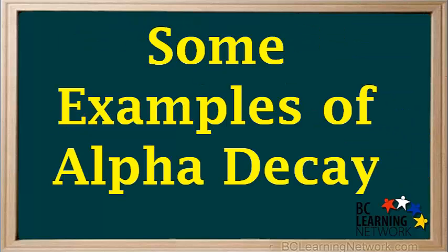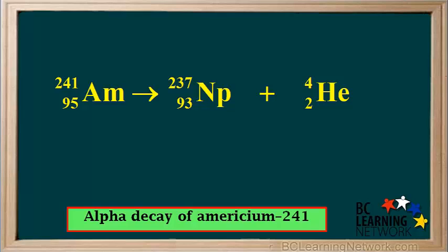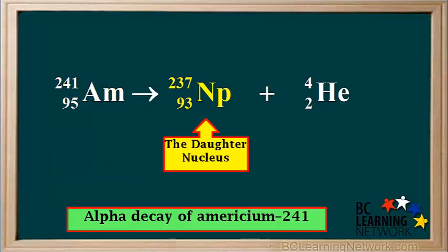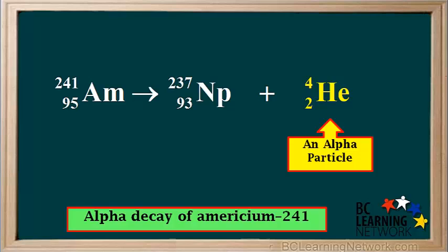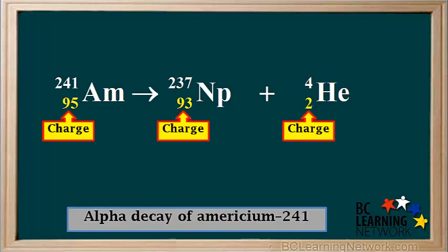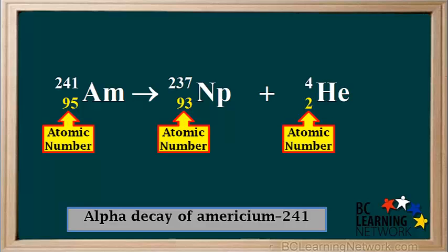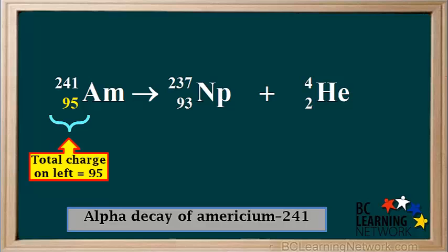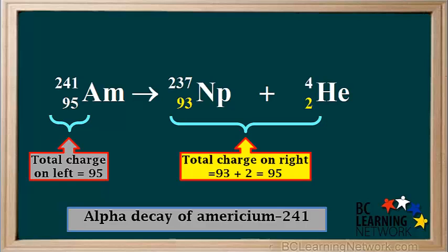Let's look at some examples of alpha decay. This is the equation for the alpha decay of the isotope americium-241. Americium-241 is the parent nucleus. Neptunium-237 is the daughter nucleus, sometimes called the daughter product, and the other product is an alpha particle. The numbers on the bottom left of each symbol represent the charges. In the nucleus of an atom, the positive charges all result from protons, so this is also the atomic number. We see that in alpha decay, charge is conserved. The total charge on the left side is 95, and the total charge on the right is 93 plus 2, which is also equal to 95. Charge is always conserved in nuclear reactions.